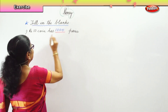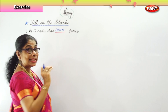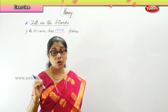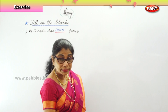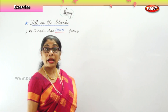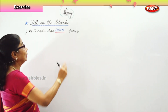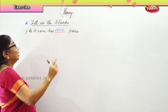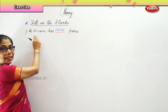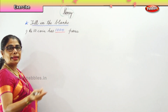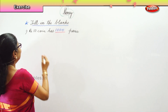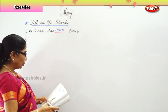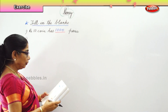1000 paise in a 10 rupee coin — paper money or coin, both are the same. So how do you get 1000? 100 paise into 10. When multiplying 100 by 10, you just add a zero.